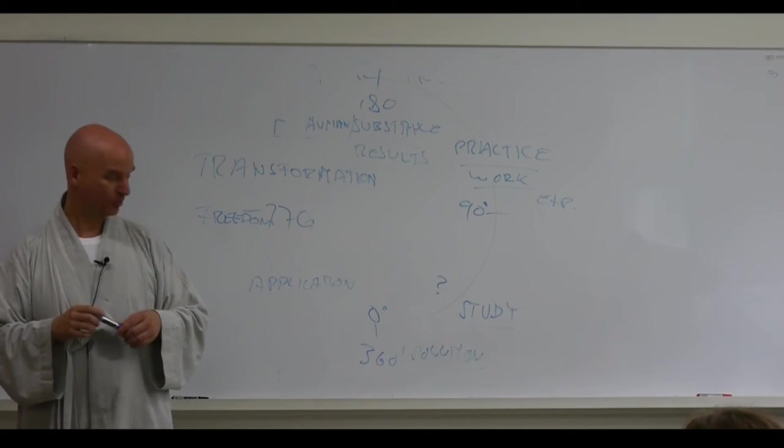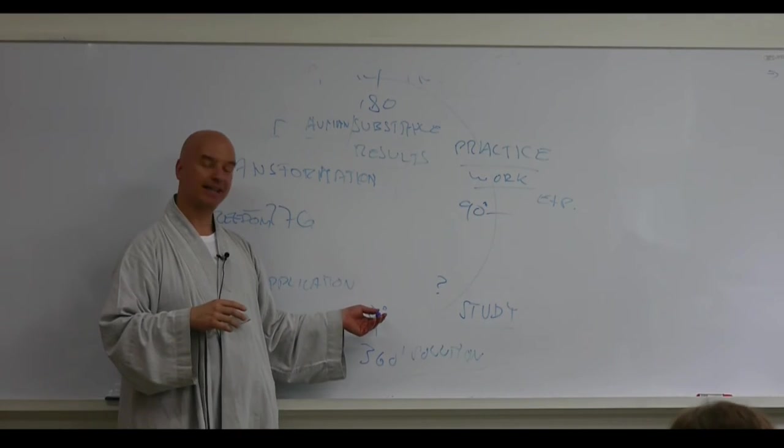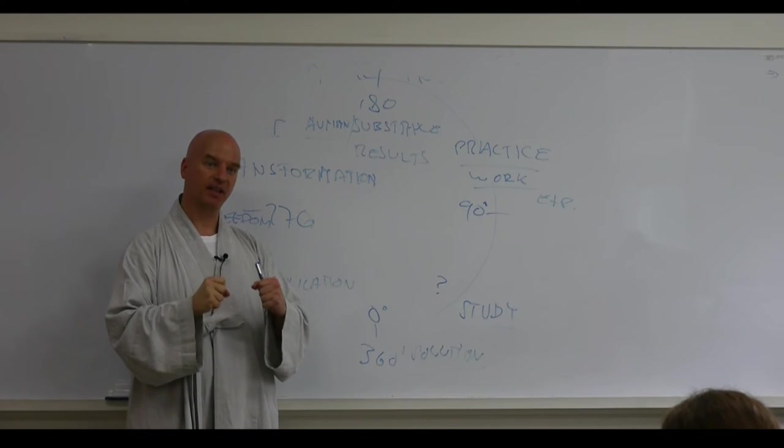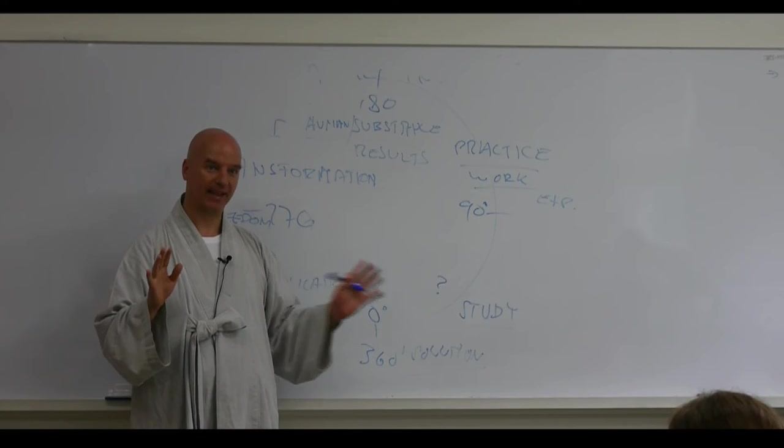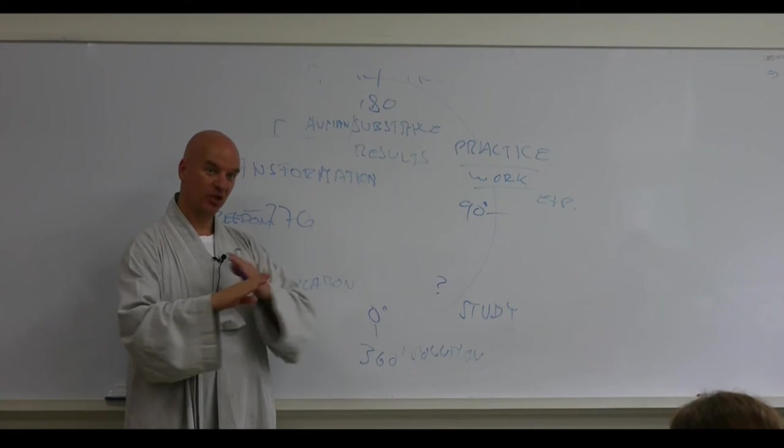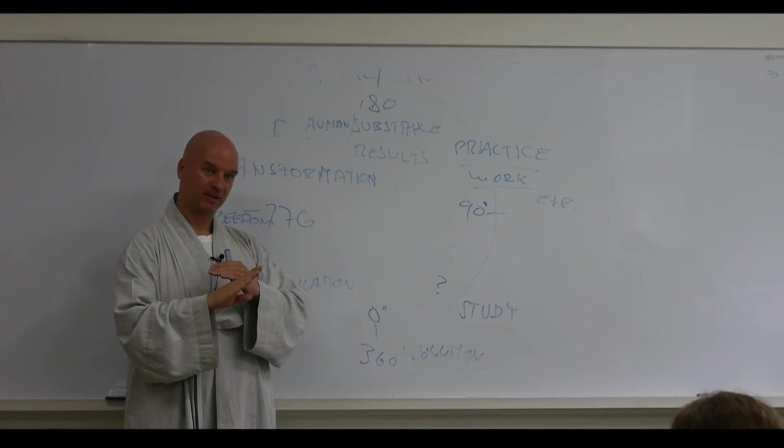And just as to add to your question. At zero the self is airtight. The ego is totally undivided, unbroken, unmitigated. And at 360 no ego. Okay?